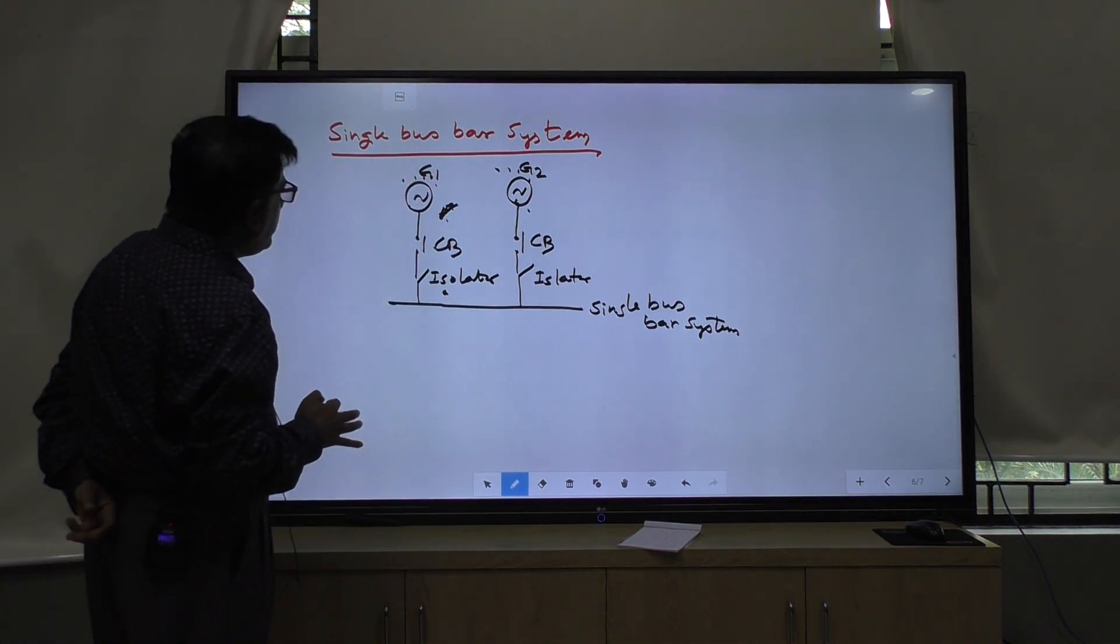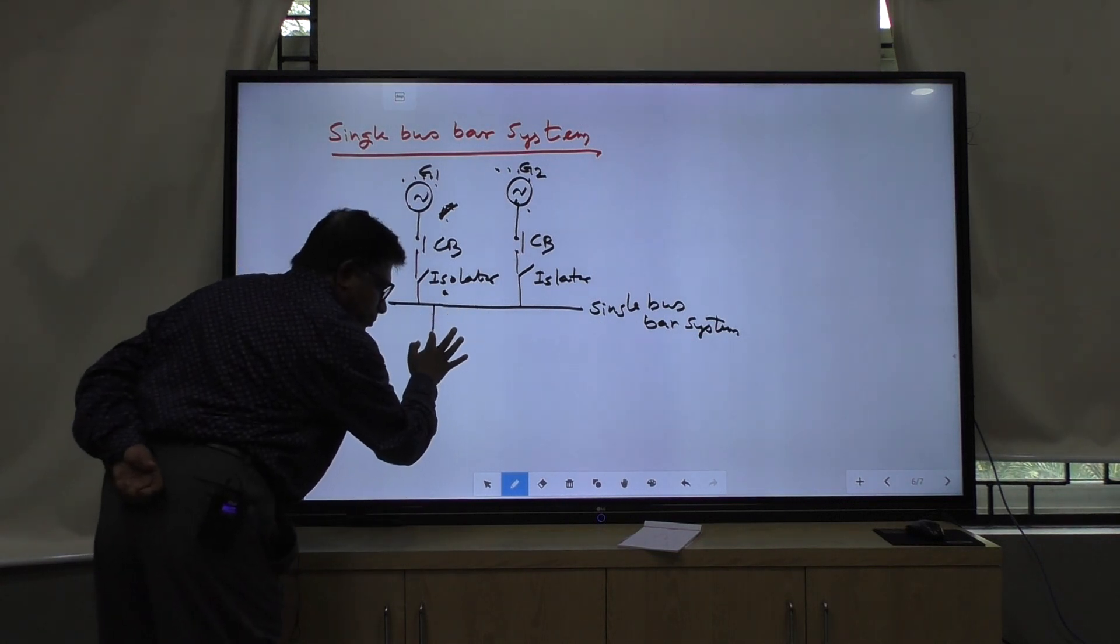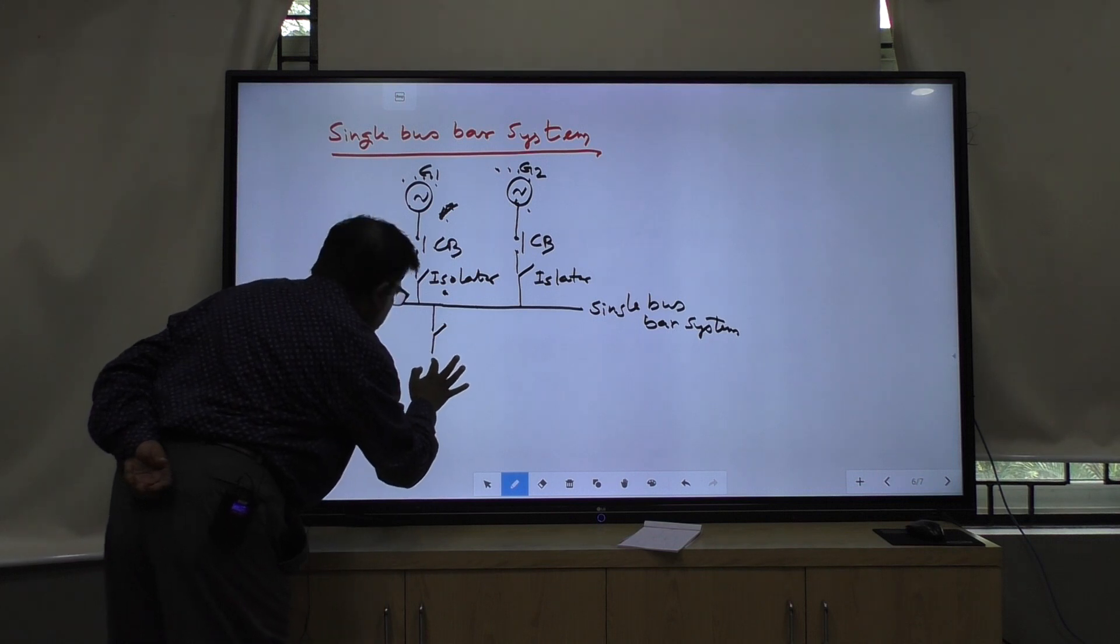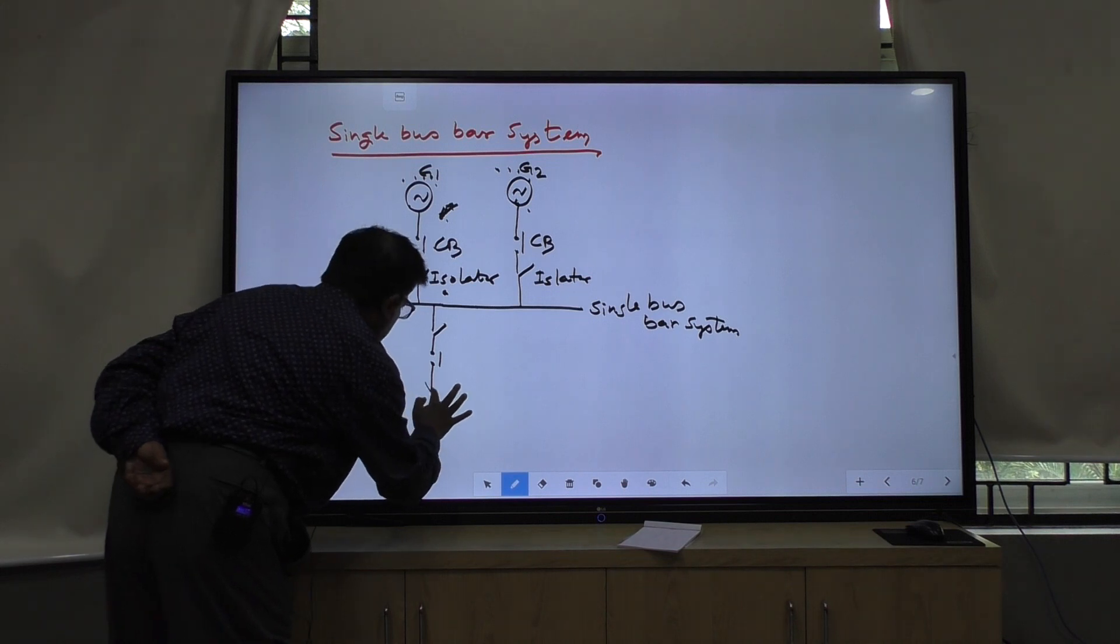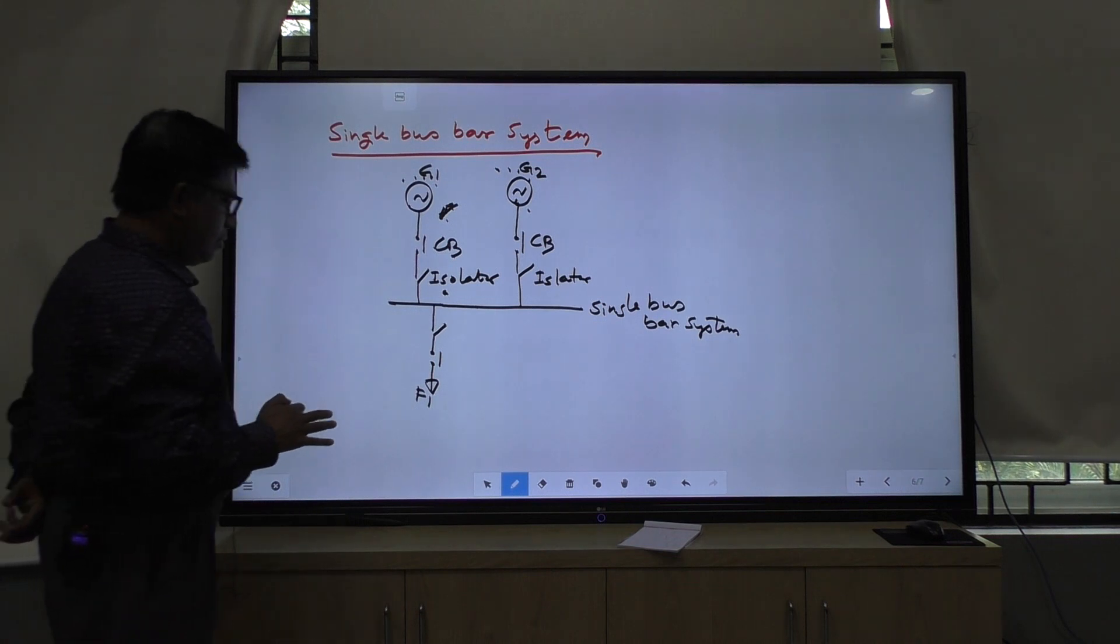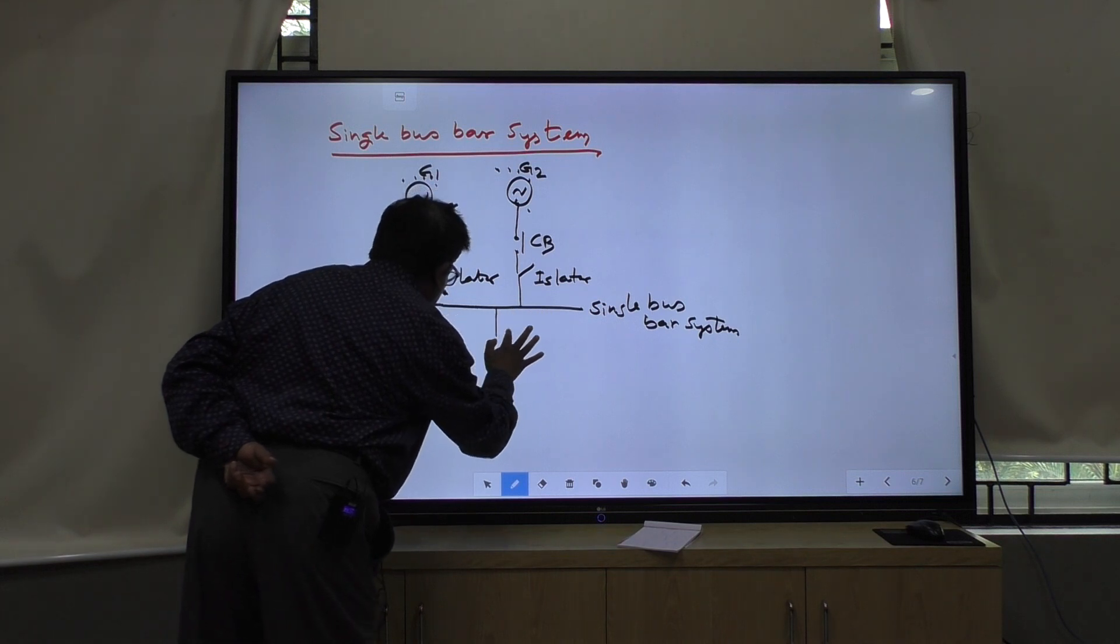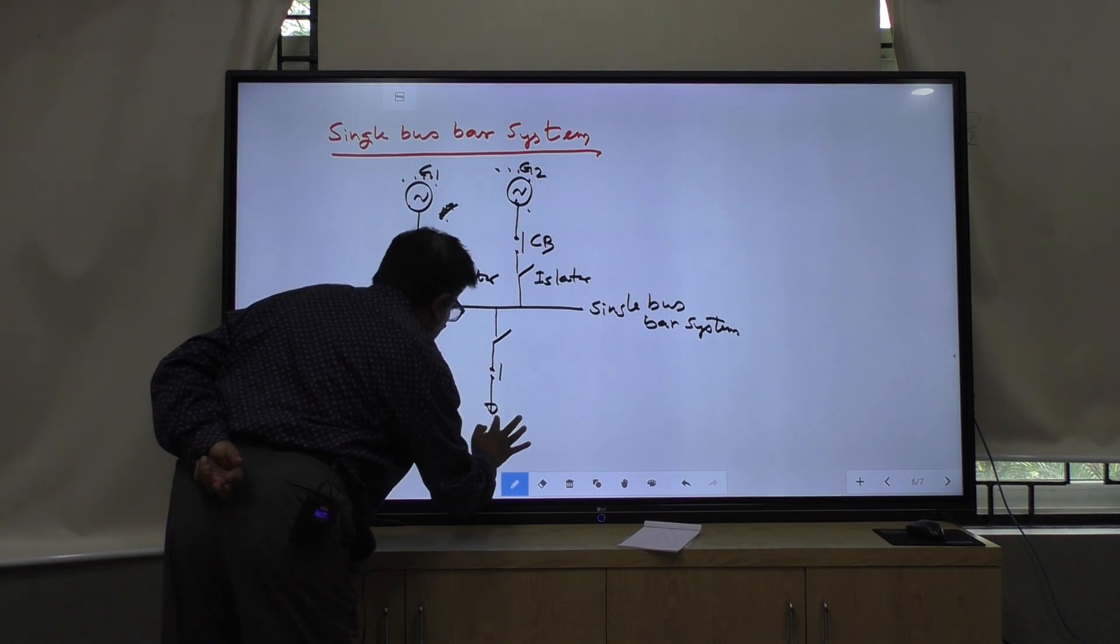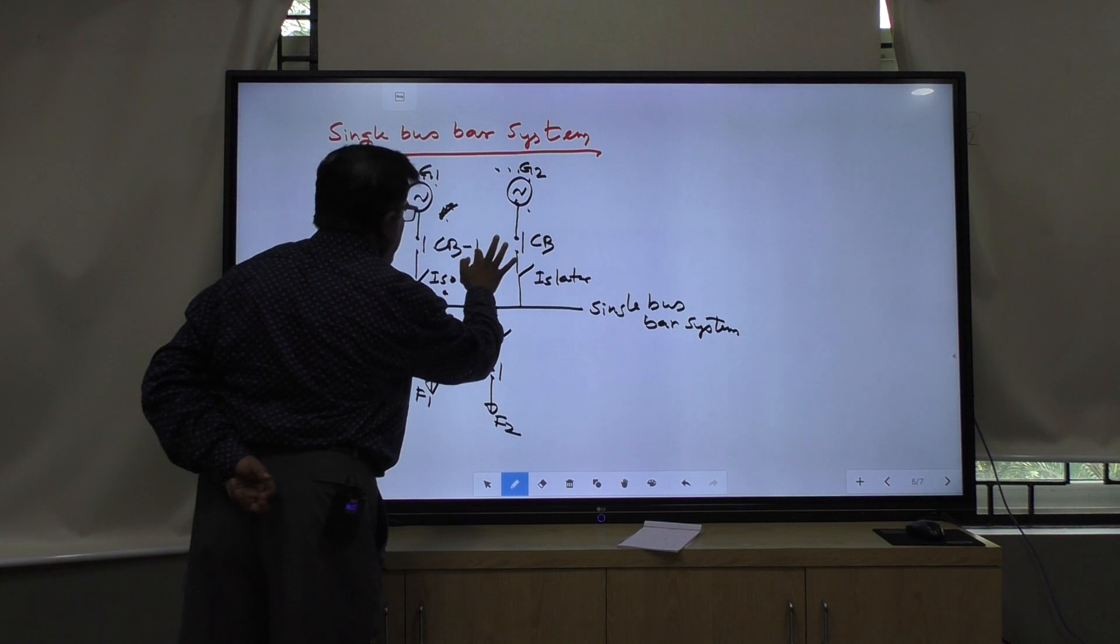Then this is your incoming feeder. Then you see the outgoing feeder. This is isolator, then circuit breaker. It is feeder 1, outgoing feeder.